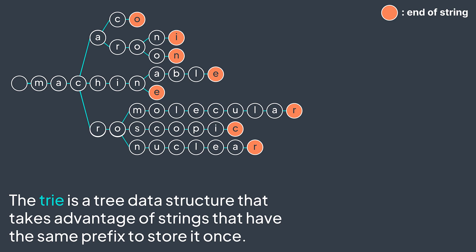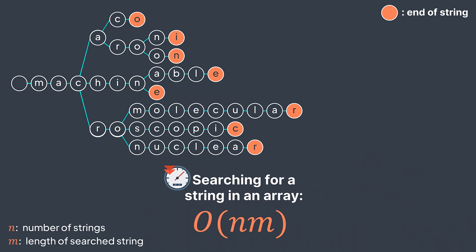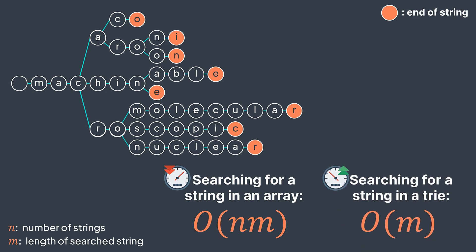The word trie comes from 'retrieval' — it has efficient retrieval. Instead of comparing the string we're searching for with all the strings, which is the case when stored in an array and can cost O(n × m) time, we just traverse the trie by moving to the next level at each iteration, which costs O(m) time only, where m is the length of the string we're searching for.